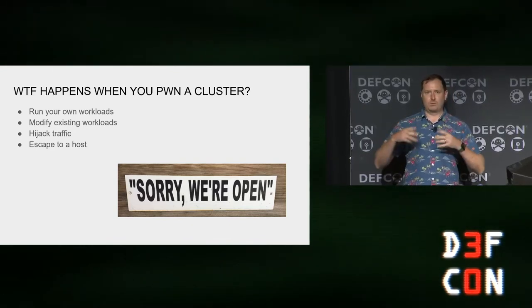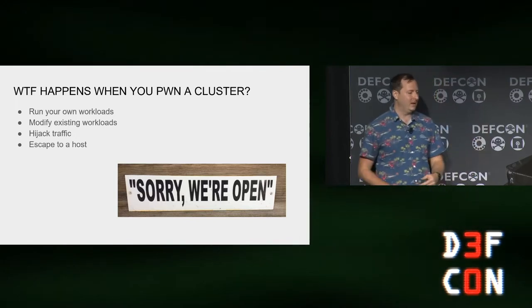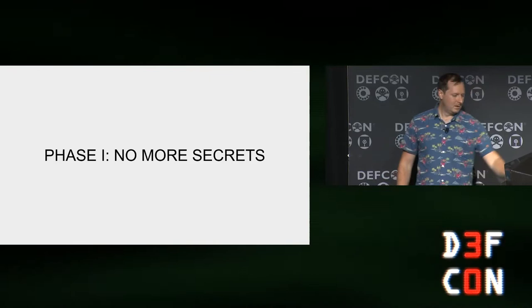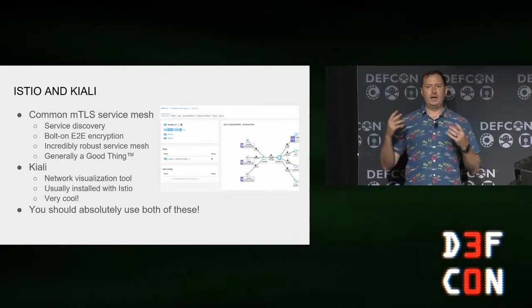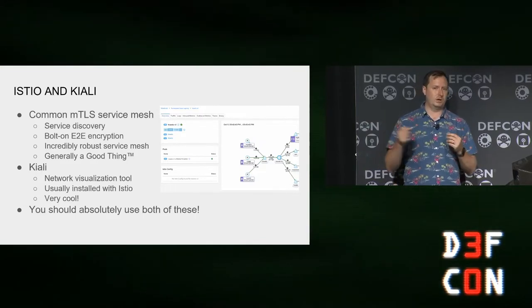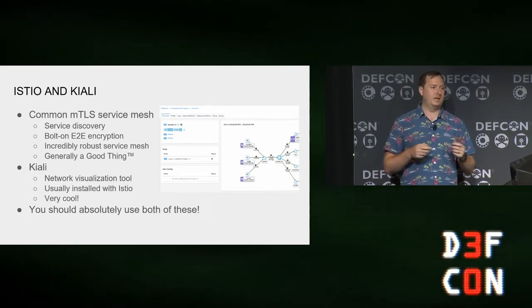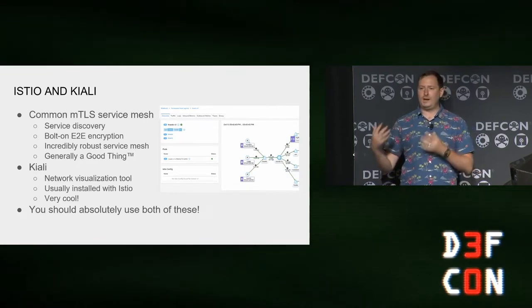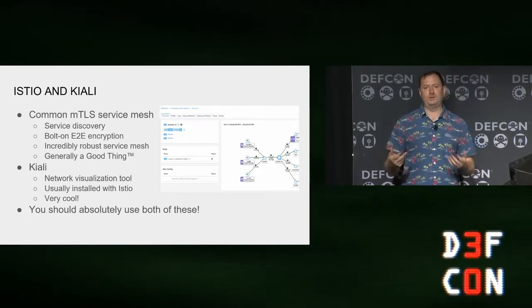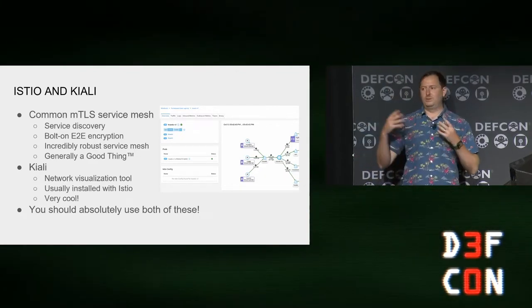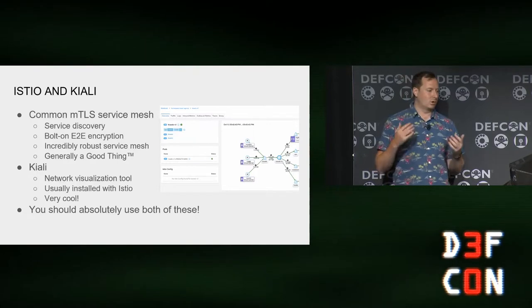We're going to talk about three different attack angles today. These vulnerabilities probably could have existed at the same time, but it's not like we ran into a cluster that had all of these simultaneously. And again, no zero days today. Phase one: No More Secrets. Istio is a giant man-in-the-middle proxy — we're going to inject a sidecar into every container we launch and hook onto it to route all traffic through iptables. We're going to use MTLS — mutual TLS authentication — so that as a developer writing a service, you don't have to figure out how to make MTLS work. You just run your pod in a system with Istio and you get the benefit of all that.